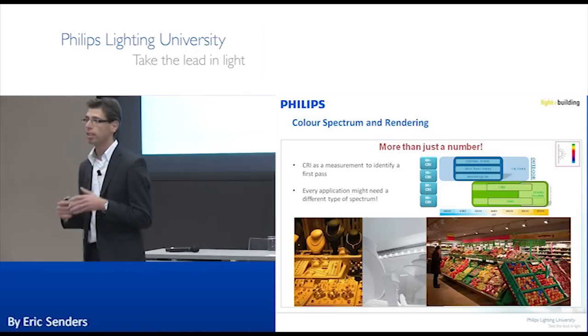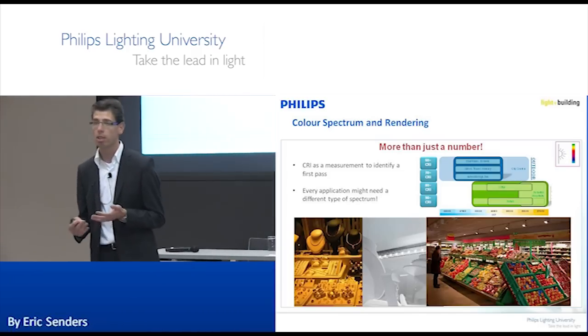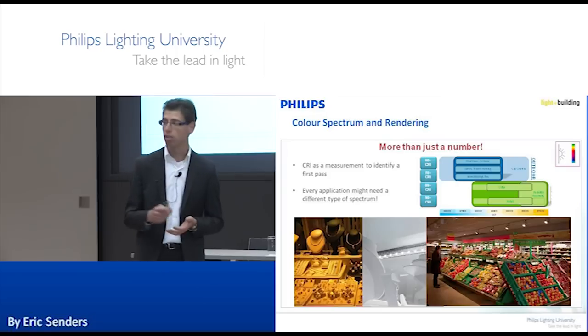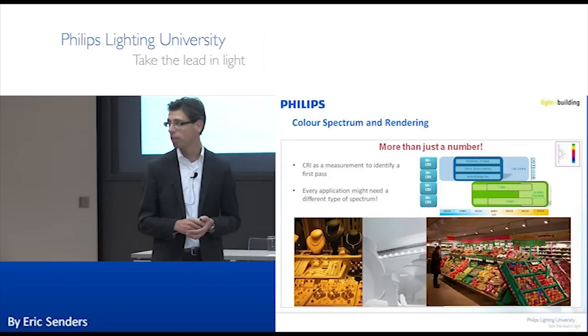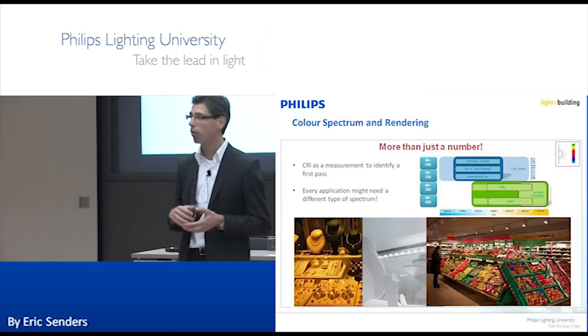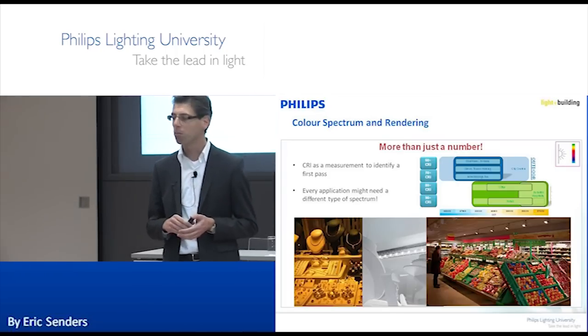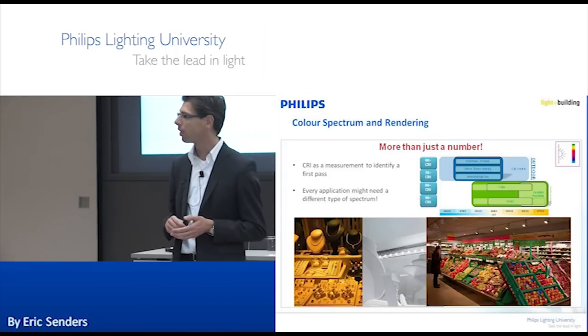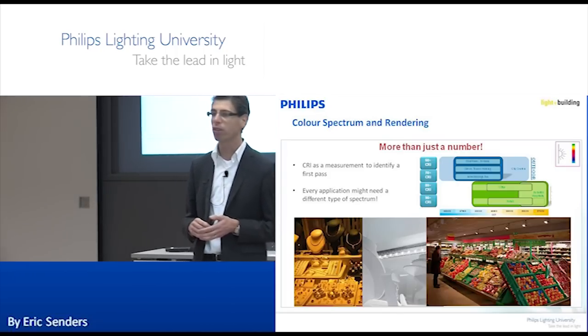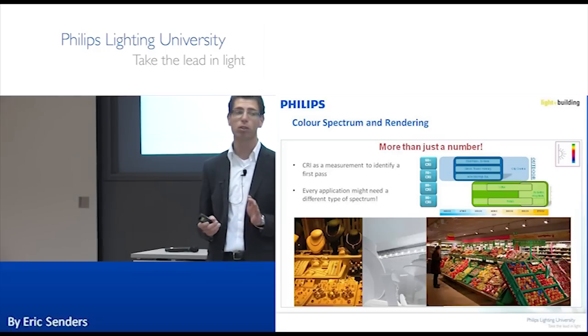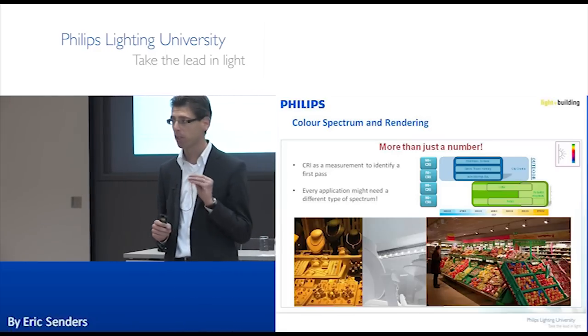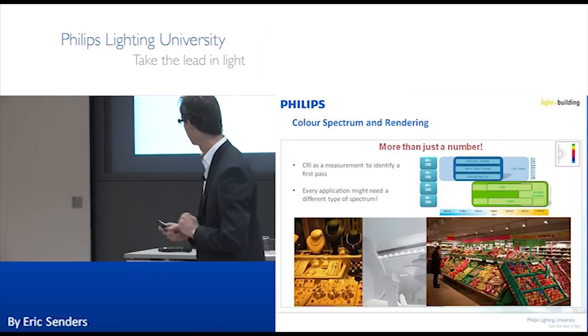For indoor lighting, 80 CRI is the minimum, with 90 CRI options available. For outdoor lighting, I don't believe CRI makes a big difference, but some outdoor municipalities specify a minimum of 70 CRI. For jewelry, it's really important to know the right color temperature to sell your products.